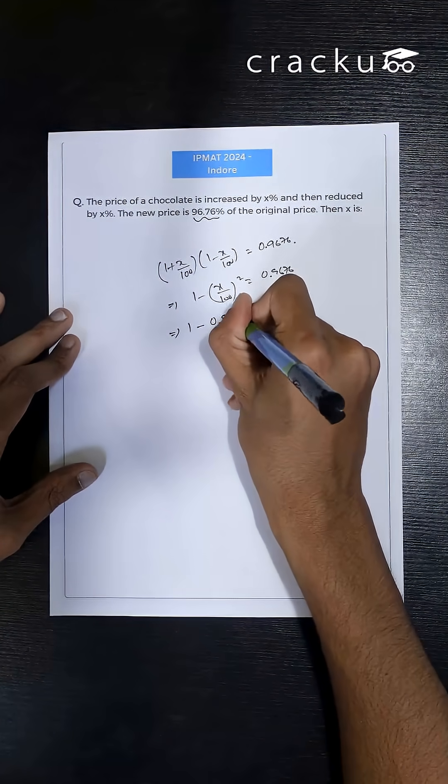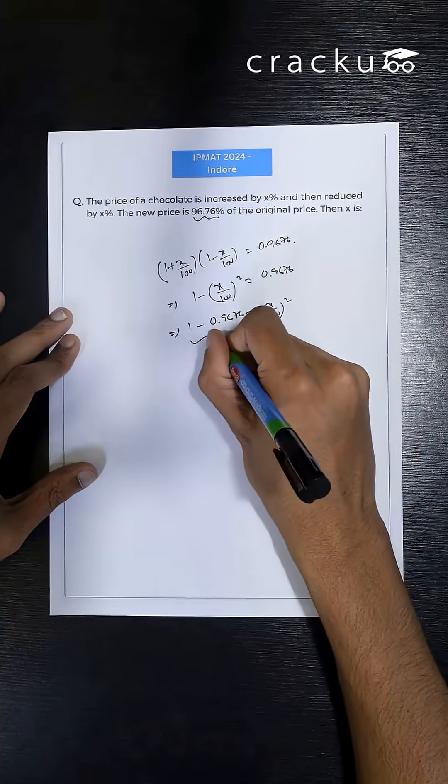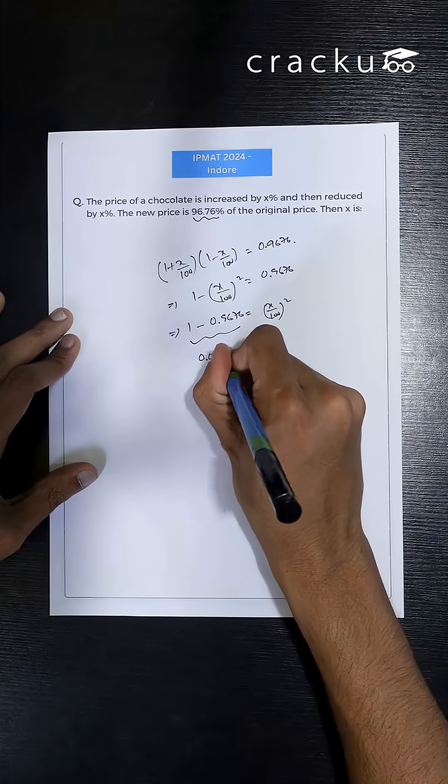Now 1 minus 0.9676 equals to x by 100 square. Now 1 minus 0.9676 is 0.0324.